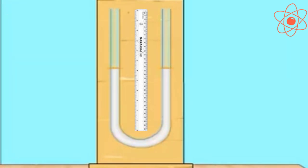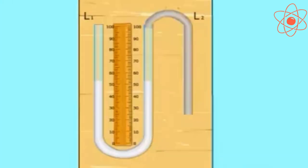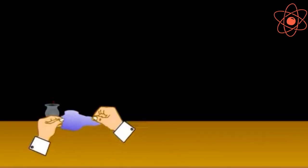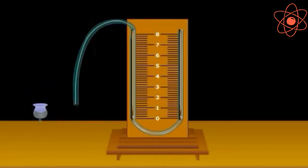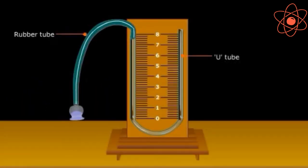The level of water in both the arms of the u-tube will be the same. Connect one end of the u-tube with the rubber tube. Attach a thistle funnel to it with a rubber membrane stretched across its mouth. Your manometer is ready.